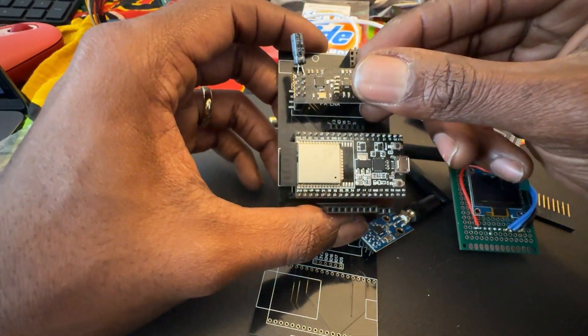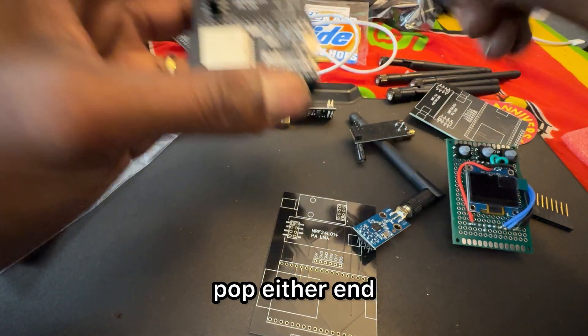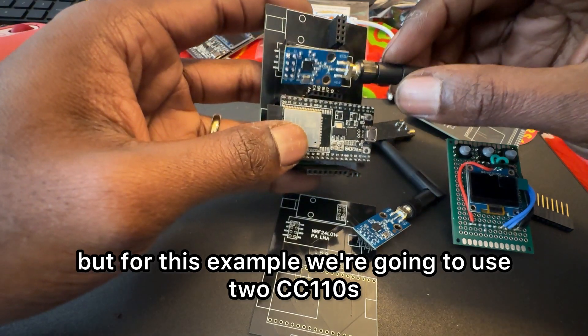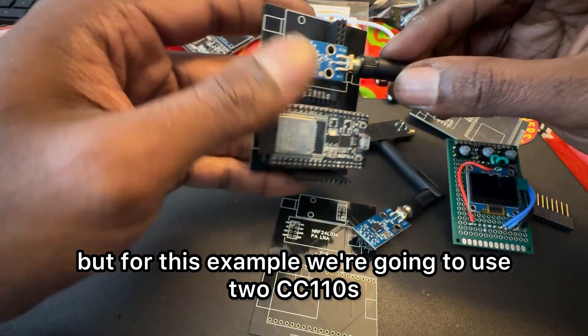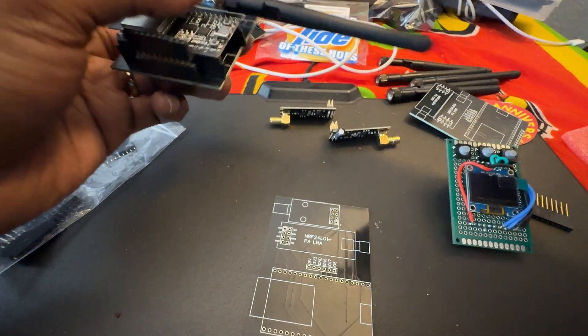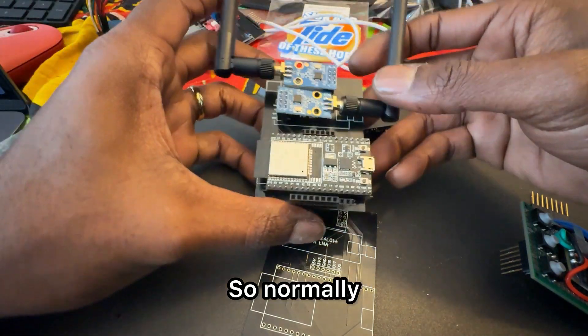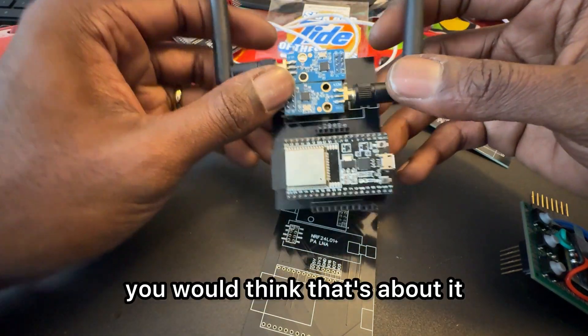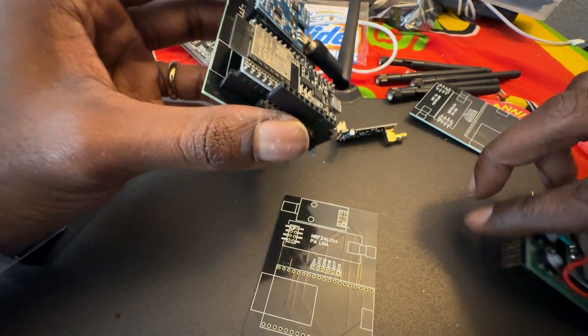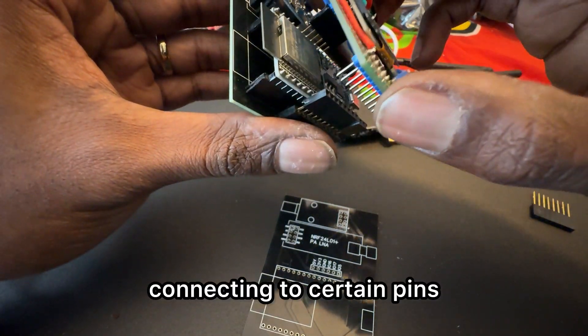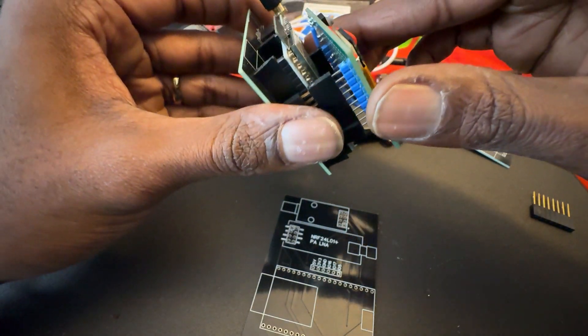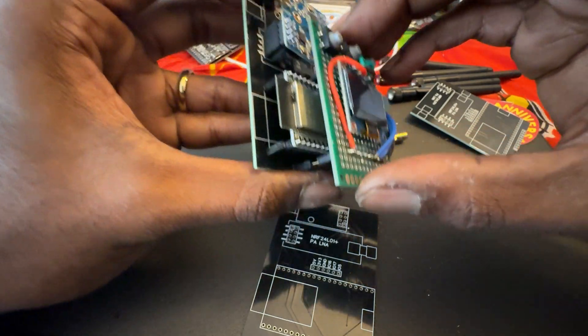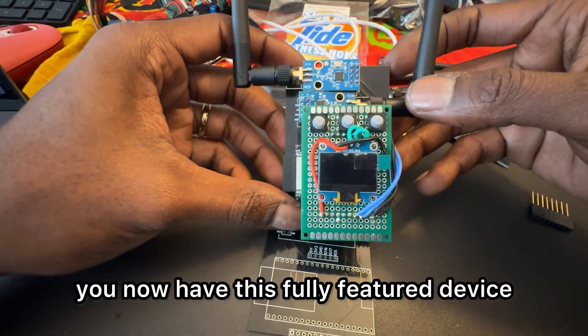So you could pop either in, but for this example we're going to use two CC110s. Normally you would think that's about it, but now connecting to certain pins that are extra, now this is a fully featured device.